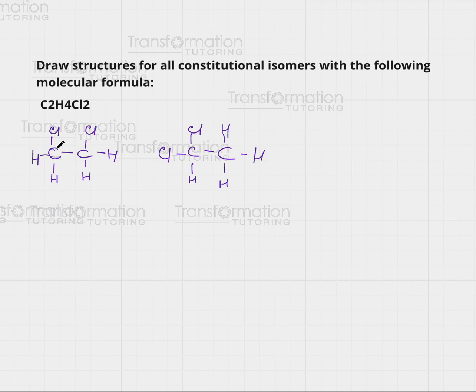Here I have a chlorine on carbon one and a chlorine on carbon two so I would have one-chloro-two-chloro ethane. Here I have both chlorines on carbon one so that would be one comma one dichloroethane. They would have different names.